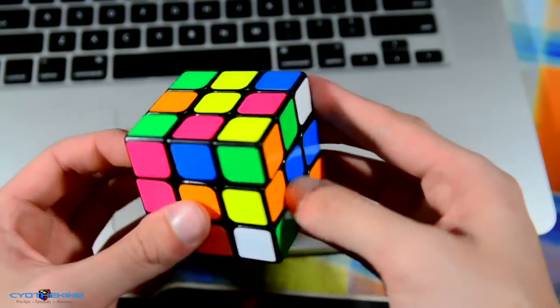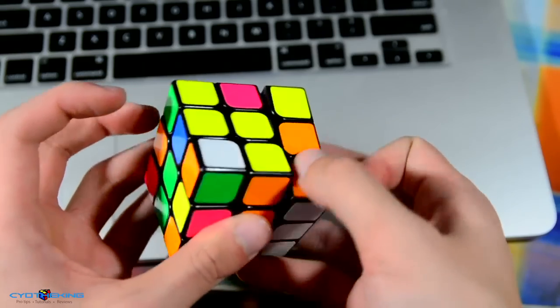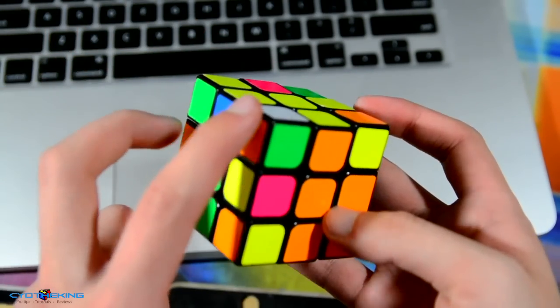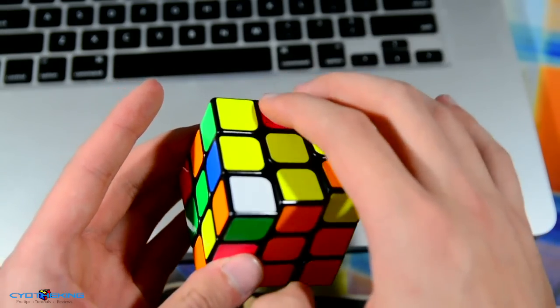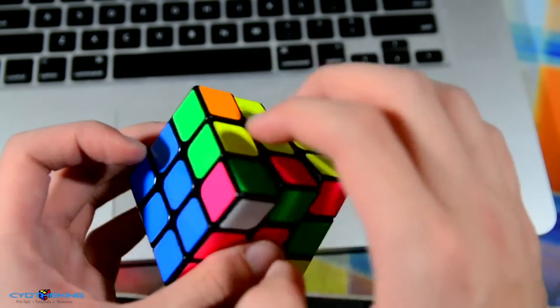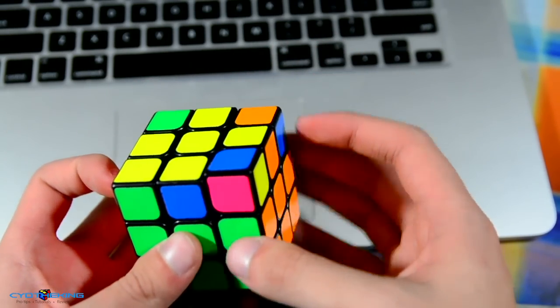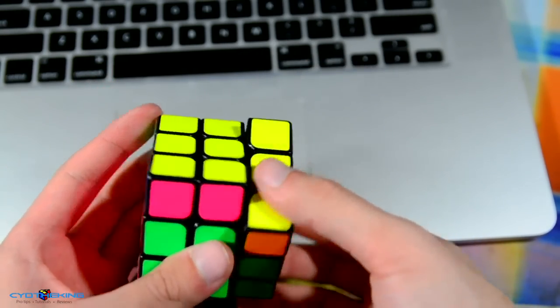I saw these two right away so I solved those, then saw these two pieces right here and solved those. Then for some reason I did these two right here - actually no wait, I did do these two. So I did a Y2, did these and then did these two, and then was left with anti-Sune and then a V perm.